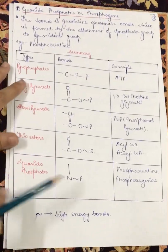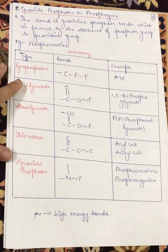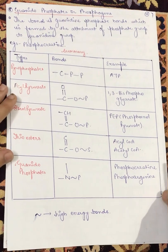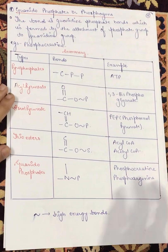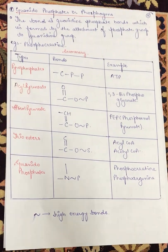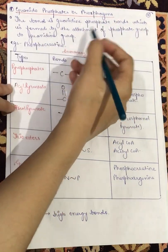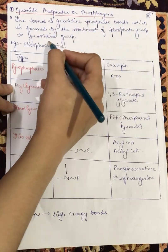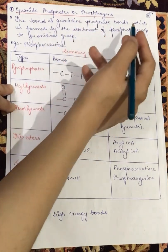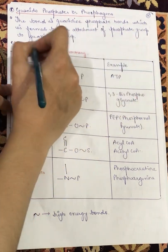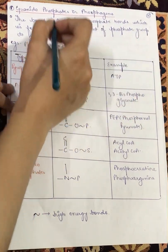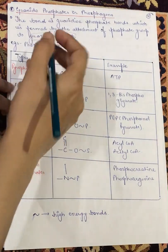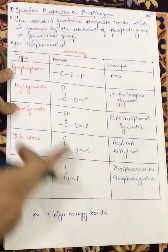Next is guanidophosphates, also known as phosphogens. The bond is a guanidine phosphate bond, which is formed by the attachment of a phosphate group to a guanidine group. An example is phosphocreatine.